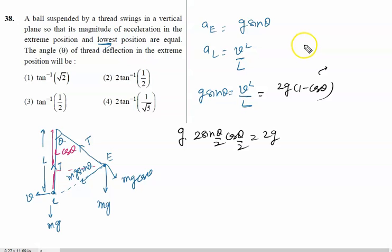So cos theta can be written as sin squared (theta/2). So finally g cancel, 2 cancel, sin(theta/2) cancel. So left hand side it is cos(theta/2) equal to 2 sin(theta/2).